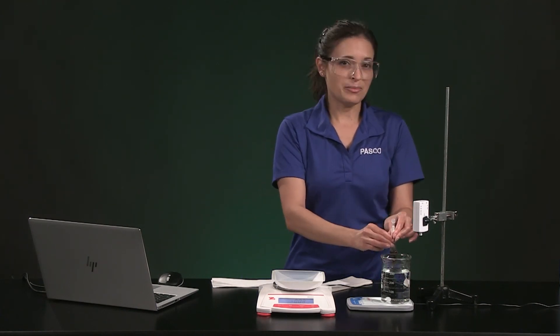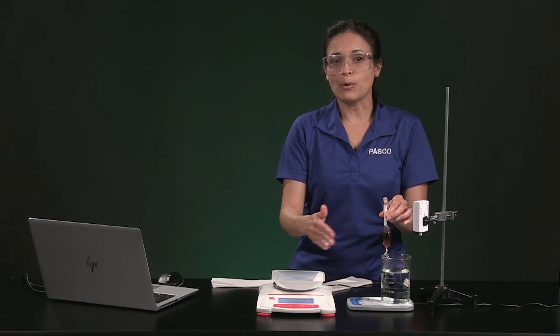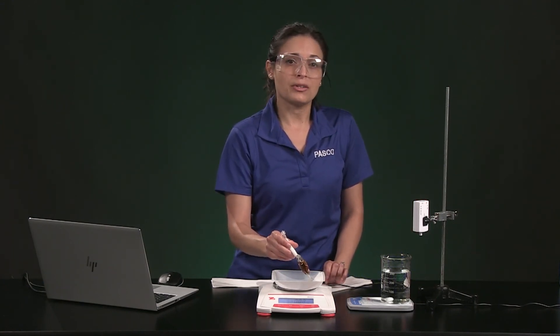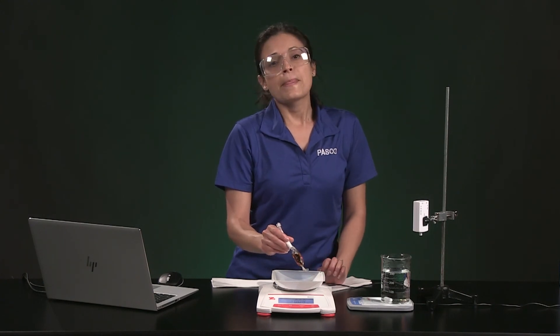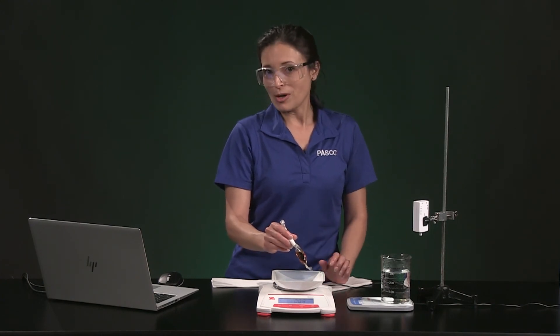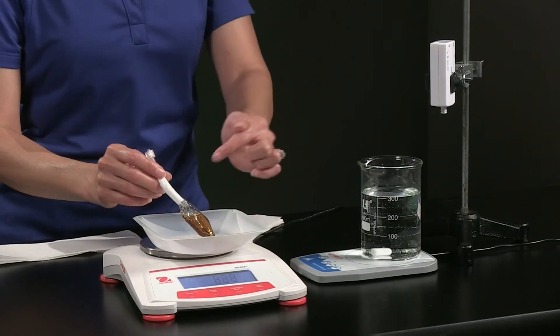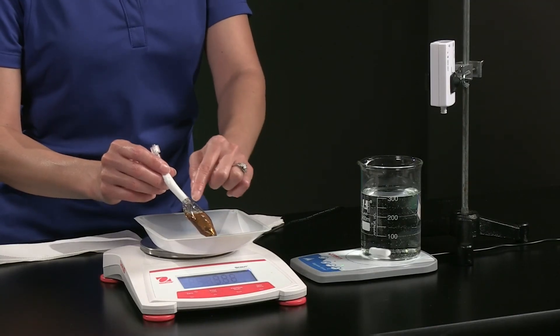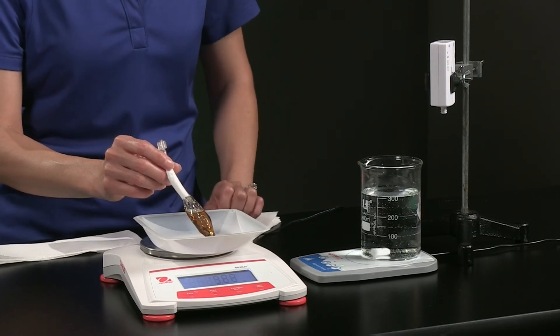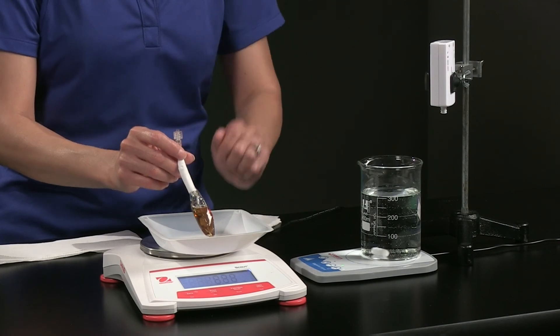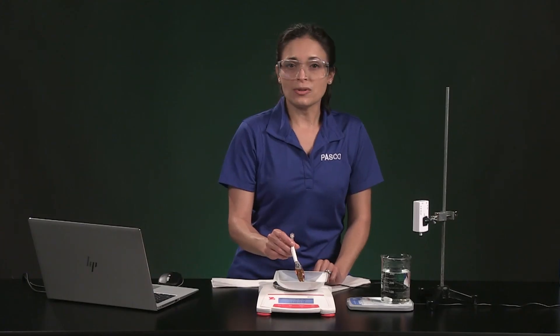When I put the bag in the beaker, water will move back and forth through the membrane but the pressure sensor will help us understand which direction water is moving overall. That is what I am going to call the net movement of water. If water has a net movement into the bag, that air space will shrink and the pressure will increase. If water has a net movement out of the bag, the air space will get bigger and pressure will decrease.